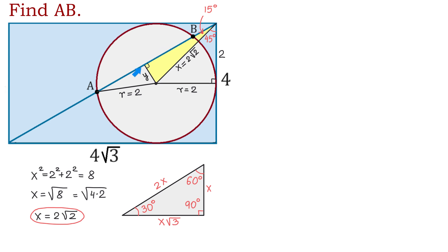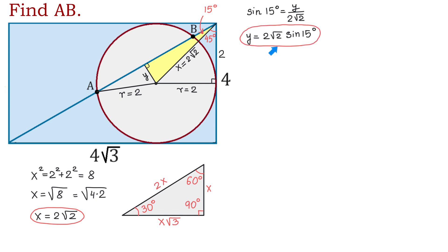Now once we know this angle, we can use the sine function to find Y. We will write that sine of 15 degrees equals the opposite Y divided by the hypotenuse 2 square root of 2. So sine of 15 degrees equals Y divided by 2 square root of 2. Then we solve for Y and we write that Y equals 2 square root of 2 times sine of 15 degrees. It's important to mention that a perpendicular to the chord bisects this chord, meaning this distance is the same as this distance. Let's call each of them Z.